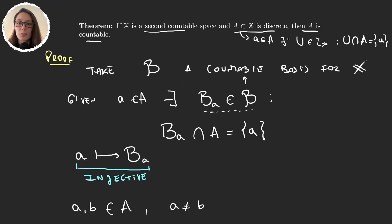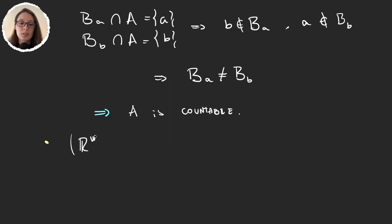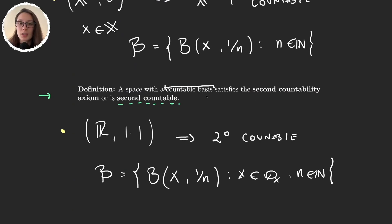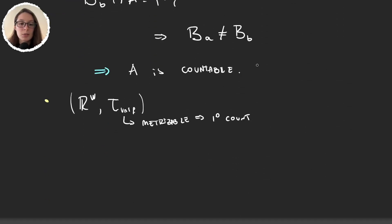Let's see an example of when this theorem fails — that is, an example showing first countable does not imply second countable. Consider ℝ^ω with the uniform topology. Recall the uniform topology is metrizable, so it is first countable. Also note that second countability trivially implies first countability: if there is a countable basis globally, then in particular there is a countable basis at each element. So second countability implies first countability, but the reverse is not necessarily valid.